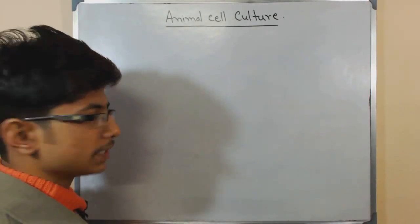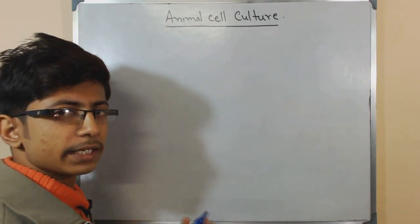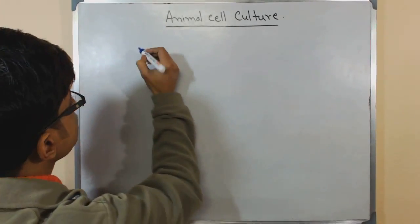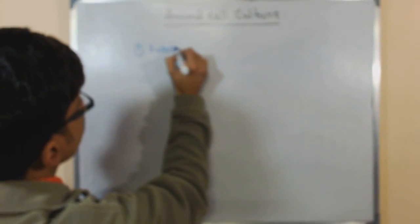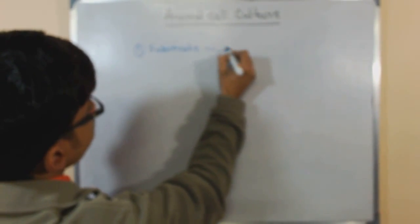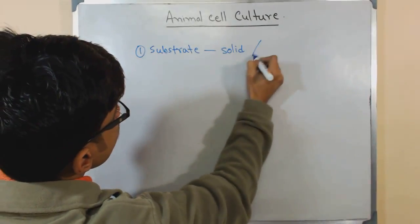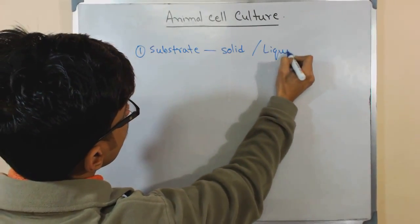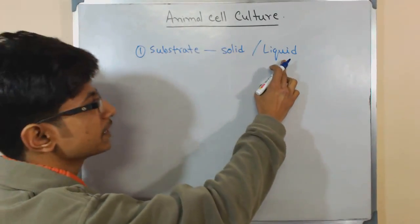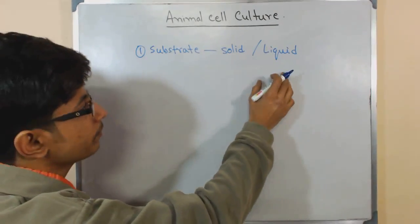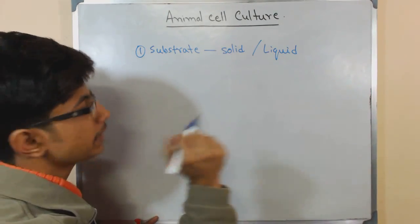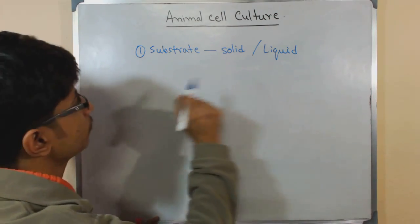Usually, there are four things that are required for animal cell culture process. One is the substrate - that can be solid surface or liquid. For the suspension type of cells, they will easily grow in the liquid medium, but for the anchorage dependent type of cells, we require the solid surface for the growth.